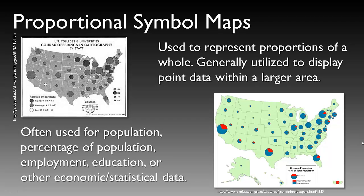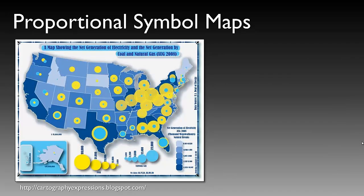The examples on the left show U.S. colleges and universities offering courses in geography by state, and on the right we have Hispanic population as a percent of the whole population. Here is an excellent example of a very complex series of data displayed in a proportional symbol map, showing net generation of electricity, coal, and natural gas. There are yellow and blue symbols along with an interval display of net generation of electricity.